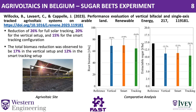Coming to Europe, a sugar beets experiment was conducted with Agrivoltaics. It showed almost 26% reduction of yield with a single-axis solar tracking system. With the vertical setup, it showed 20% reduction in yield, while for the smart tracking configuration — which controls the solar module orientation based on whether you want to produce more energy or give more sunlight to the plants using a custom algorithm — it resulted in a reduction of almost 15% of yield.